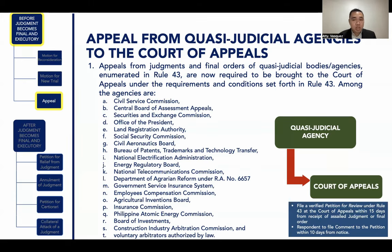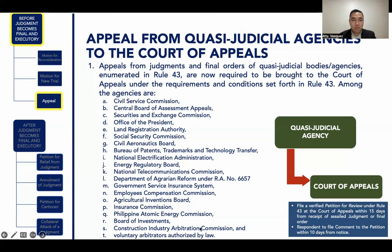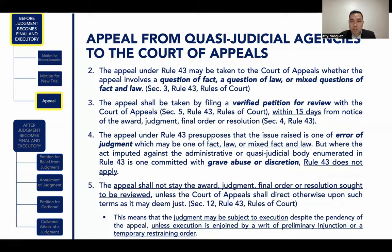With respect to any of these quasi-judicial agencies, their decisions are appealable to the Court of Appeals by filing a verified petition for review under Rule 43 within 15 days from receipt of the assailed judgment or final order. Thereafter, the respondent is allowed to file a comment to the petition within 10 days from notice. The appeal under Rule 43 is taken to the Court of Appeals whether the appeal involves a question of fact, a question of law, or mixed questions of fact and law.